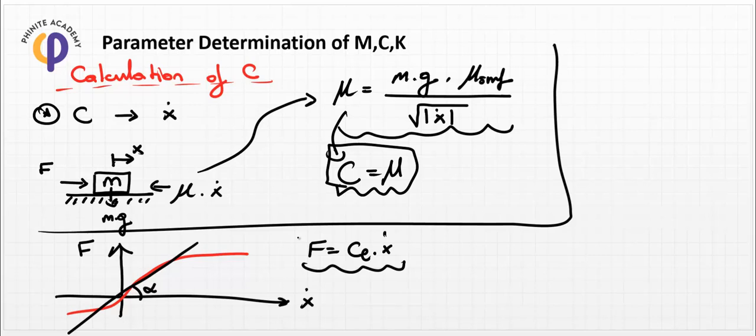In the next lesson, we will continue with dynamic examples. We will create system dynamic models in order to develop state space representations or transfer function forms, using the M, C, K values determined from shape parameter selection and material selection.